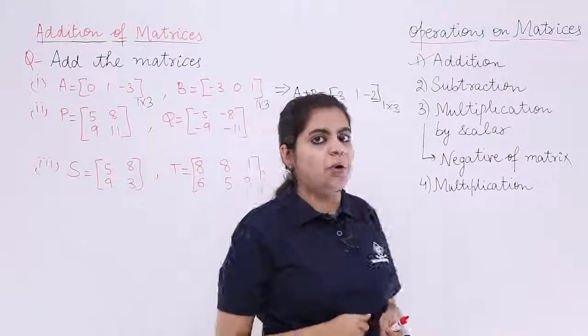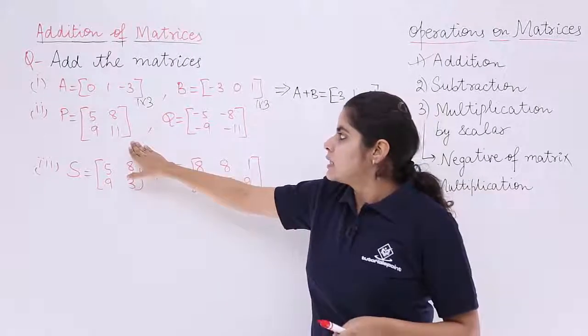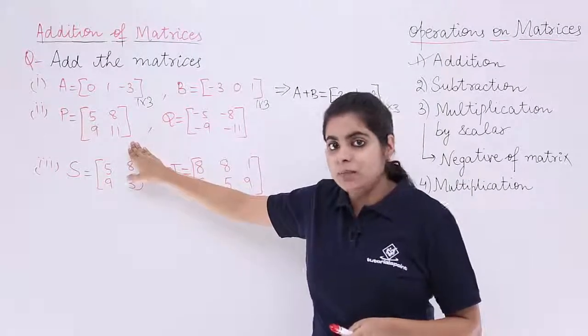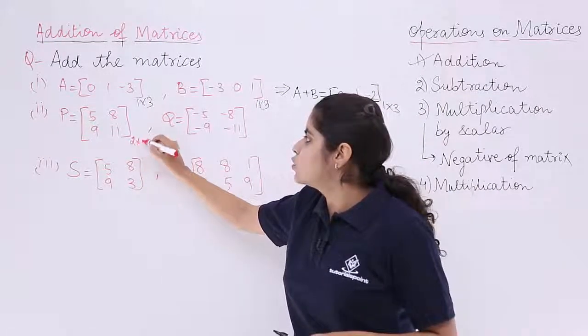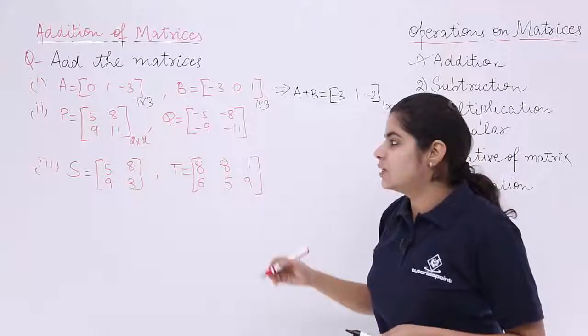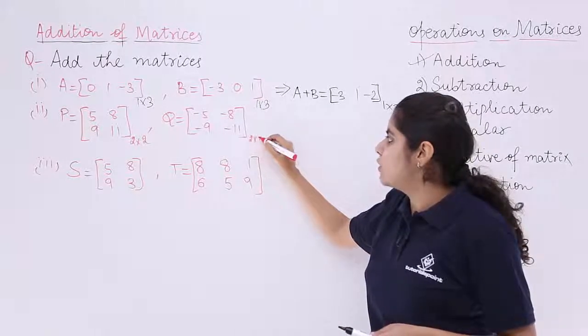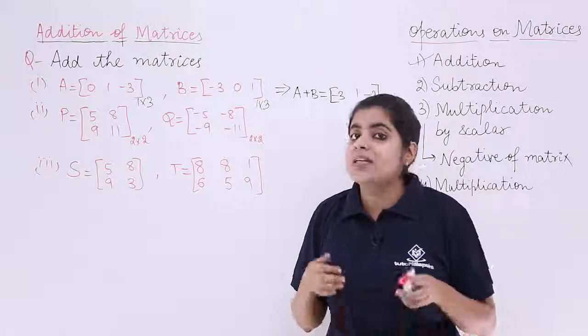What about the second problem? Let us see the second problem. Second problem has a matrix P, another matrix Q. Check the orders. 2 rows, 2 columns, 2 by 2. What about the next? 2 rows, 2 columns, 2 by 2. Both having the same order. Yes, the addition is possible.